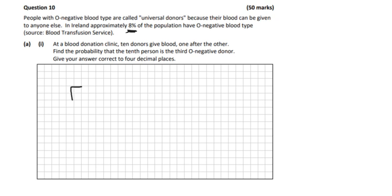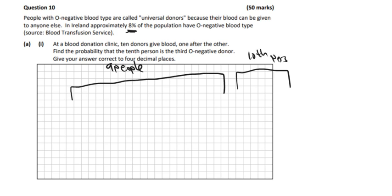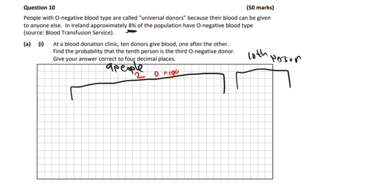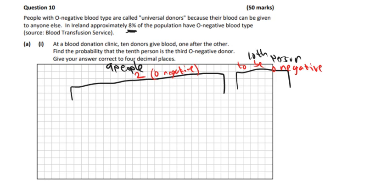So if we break this down a little bit: if you choose 9 people and then the 10th person. So really what we want to happen is we want 2 of these to be O-. So you want 2 of the 9 to be O- and then you want the 10th person to also be O-.